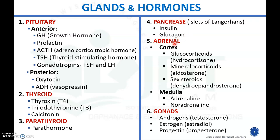The adrenal gland has two parts: the cortex releases different glucocorticoids, mineralocorticoids, and sex steroids, and the medulla releases adrenaline and noradrenaline. The gonads release different hormones: androgens, also known as testosterone, estrogen or estradiol, and progestin or progesterone.